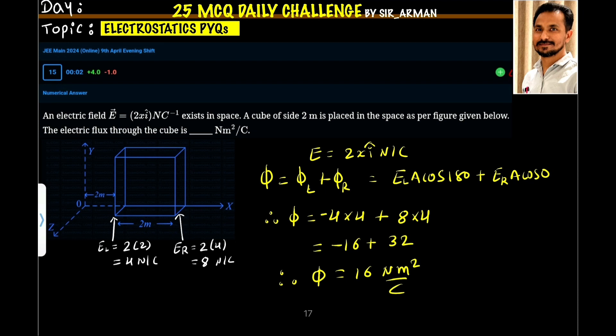So the net flux equals electric flux through left surface plus electric flux through right surface. Electric flux through left surface is EL—that is, electric field at left surface times area times cos 180. Why 180? The electric field at the left face is towards the right, whereas the area vector of the left face is towards the left, so the angle is 180. Plus electric flux due to the right, so it is ER times A times cos 0.